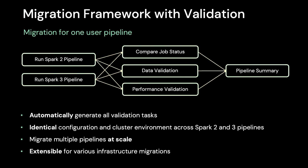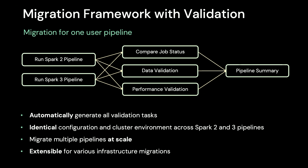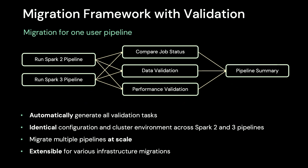To ensure a fair comparison, we run the Spark 2 and Spark 3 pipelines using identical configuration within the same cluster environment, so that we can eliminate potential uncertainties and maintain a controlled environment. That's how we migrate one pipeline with validation. This framework allows us to migrate multiple pipelines at scale together. In addition, this framework is very extensible and can not only handle the Spark migration, but also various other data infrastructure migrations.